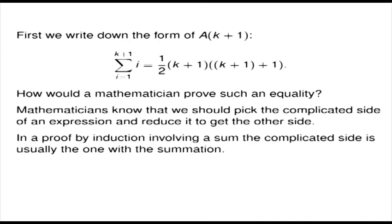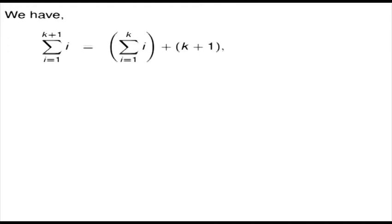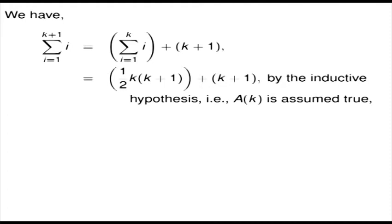In a proof by induction involving a sum, the complicated side is usually the one with the summation. So on the left-hand side, we have the summation of i from i equals 1 up to k+1, and that equals the summation from i equals 1 up to k, plus the last term k+1. We've split off the summation from i equals 1 up to k. Now we're assuming — the inductive hypothesis — that this equals one half of k times k+1. So we replace that summation with one half of k times k+1.